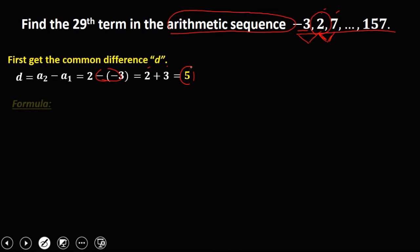Then using this arithmetic sequence formula: a sub n equals a sub 1 plus n minus 1 times d.